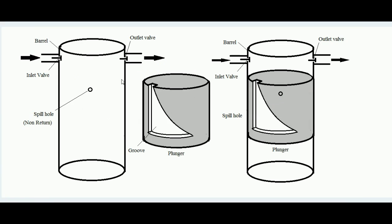Now I will explain how the fuel injector pump works and how diesel fuel is metered. The basic components are: a barrel, which is a very small cylinder with a diameter of 1 mm, 2 mm, or 5 mm. It consists of an inlet valve and an outlet valve. Over the peripheral surface of the barrel there is a drilled hole called the spill hole. The plunger is a solid piston with a groove cut over its peripheral surface — a removal of material. The inlet valve is a non-return valve: fuel can enter but cannot come back out.